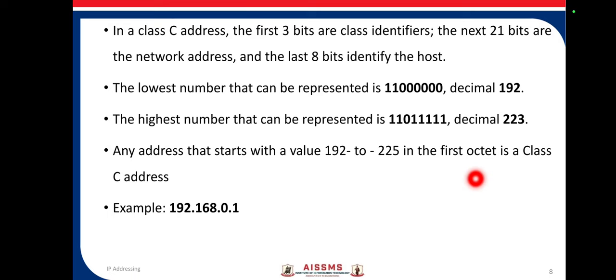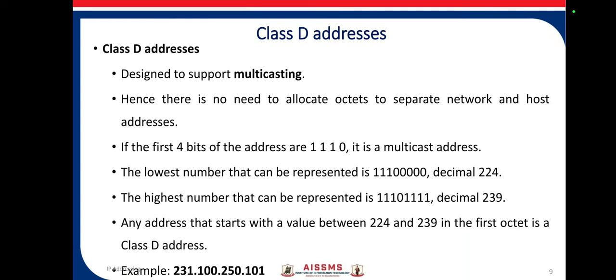Any address with a first octet value from 192 to 223 is a class C address. An example is 192.168.0.1. Class D addresses are designed to support multicasting, so there is no need to allocate octets separately for network and host addresses.